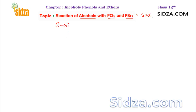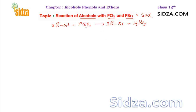When you react an alcohol molecule ROH with any of the phosphorus trihalides, for example phosphorus tribromide PBr3, the hydroxide group will be replaced by Br. This is a nucleophilic substitution reaction where Br⁻ replaces the OH from the alcohol, and you get an alkyl halide. The hydroxide reacts with the phosphorus and forms H3PO3.